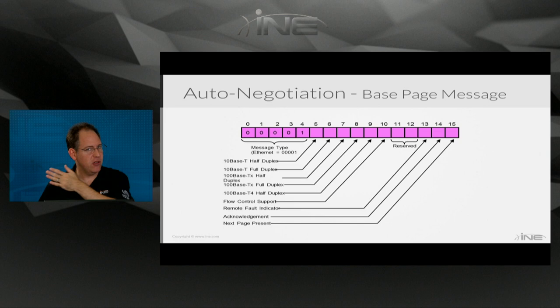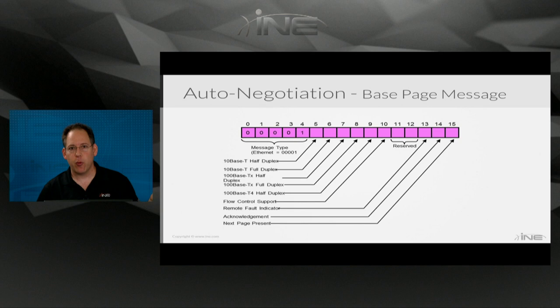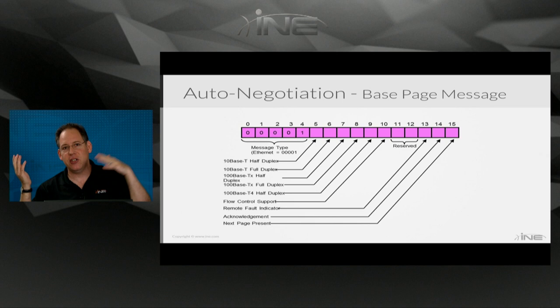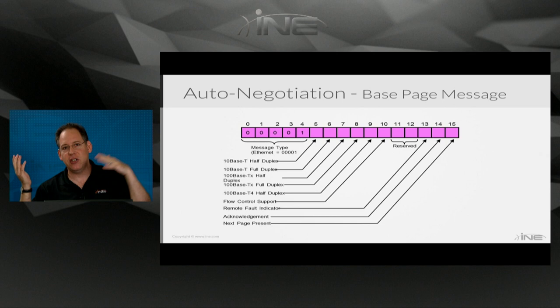When your NIC card first comes up, it sends this auto-negotiation message, and within a maximum of three transmissions, it should get an acknowledgement back — an auto-negotiation message from the peer with the acknowledgement bit set, indicating what supported speeds and duplexes the peer can do. Based on that, both sides negotiate to the highest speed and best duplex.